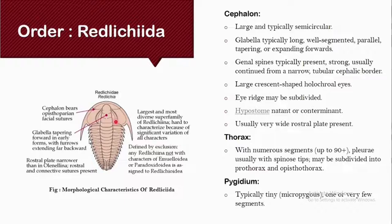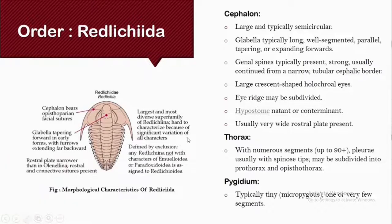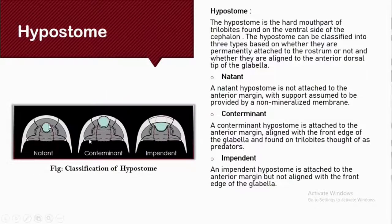Holochroal eyes are mainly compound eyes formed with a numerous amount of lenses which are connected together and covered with a single corneal membrane. The eye regions may be subdivided. The hypostome is natant or conterminant. There are three types of hypostome: the natant, conterminant, and impendent.